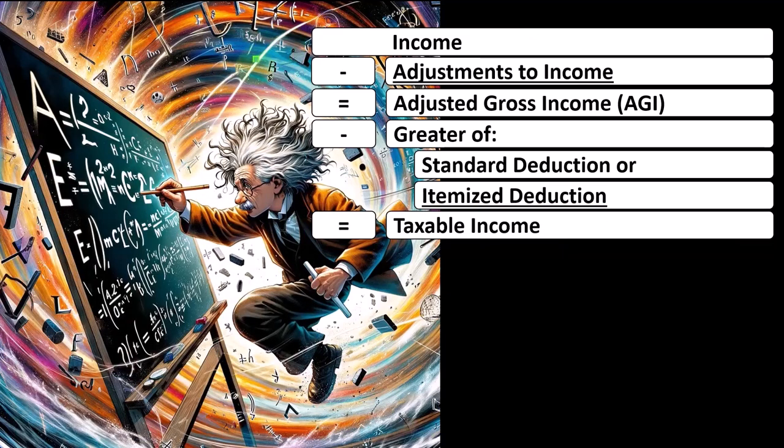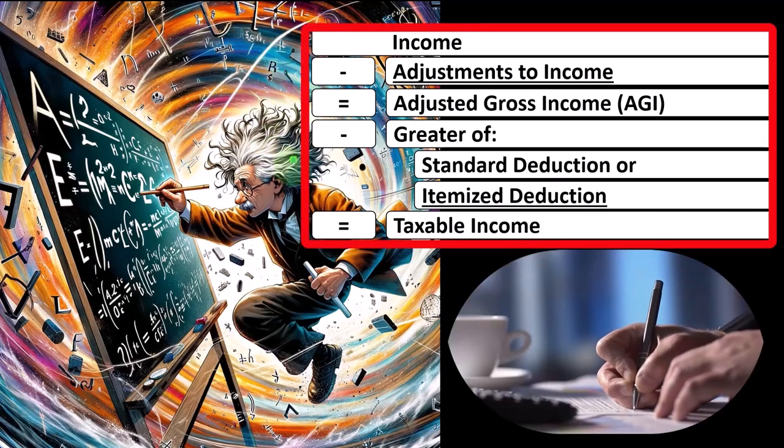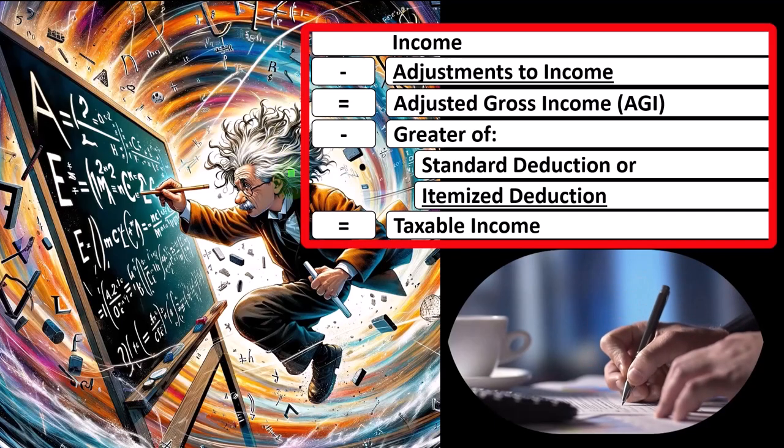This has another pit stop: income minus deductions, which are kind of expenses, which are going to be the above the line deductions, pit stop along the way adjusted gross income, and then the greater of standard deductions or the itemized deductions.